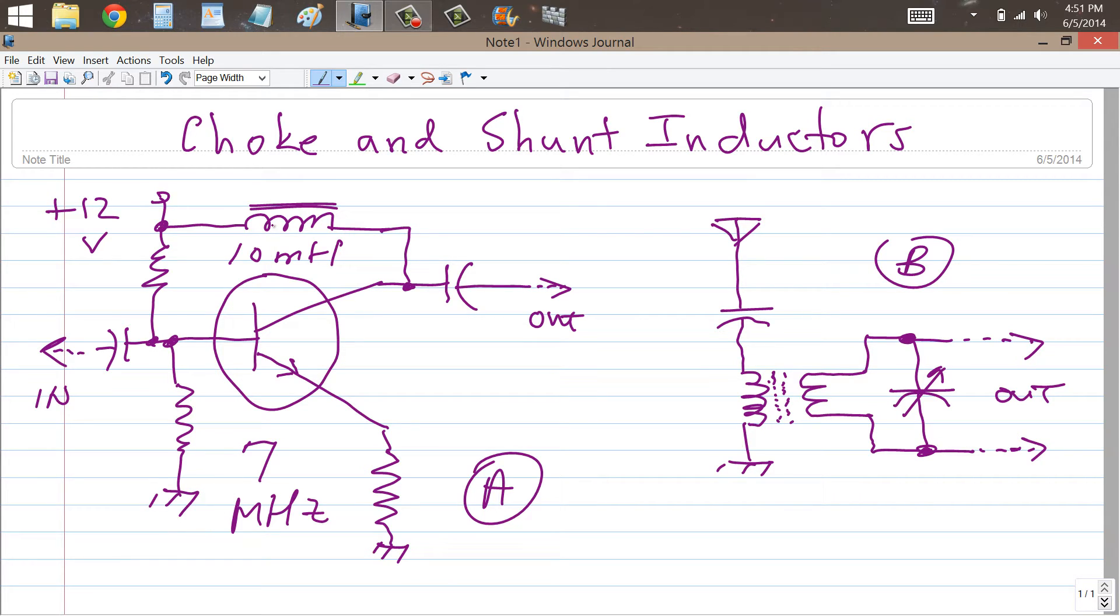That will prevent radio frequency energy from flowing back to the power supply. It will let it out through this capacitor. But it will, because it is a wire coil, provide a DC path here. So it's in effect a DC bypass and a radio frequency choke, commonly abbreviated RFC. So that is an example of an inductor in a choke application.